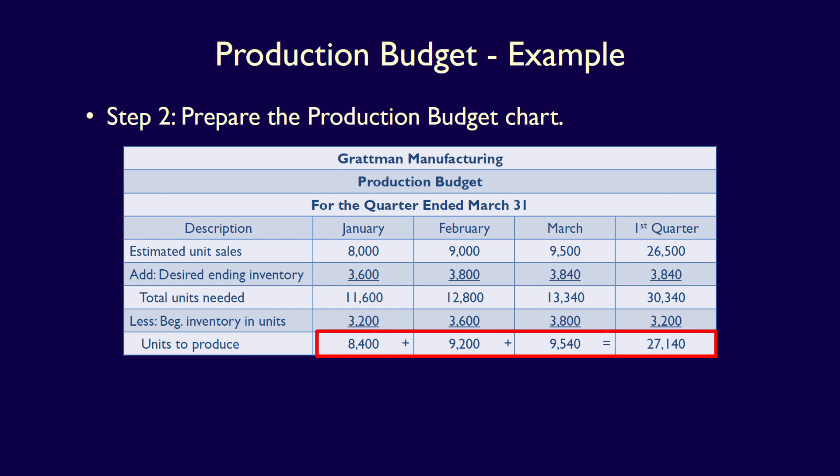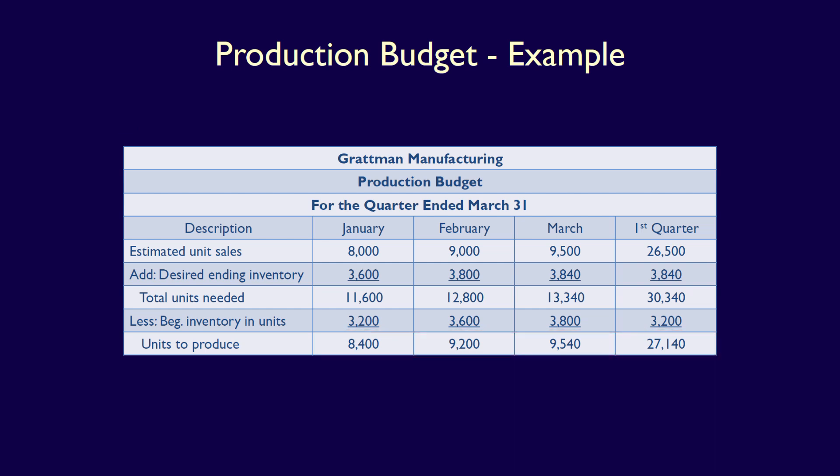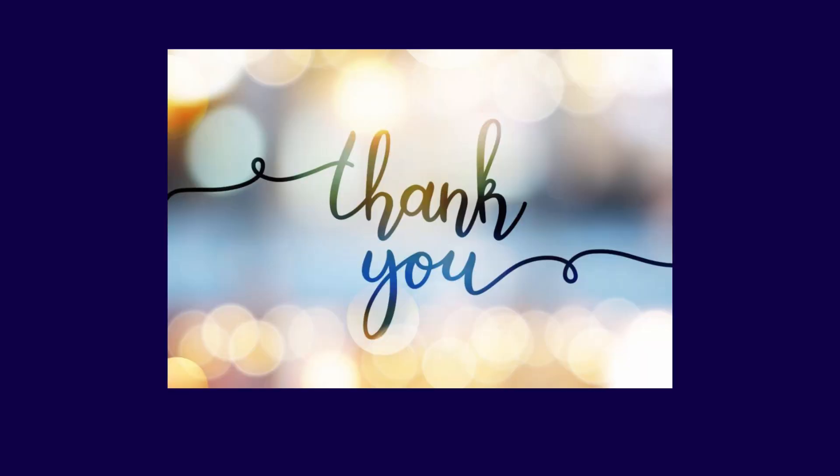We can do a quick final check to ensure our calculations are correct. By adding the units to produce for January, February, and March — 8,400 plus 9,200 plus 9,540 — we get 27,140 units, which equals the units to produce for the first quarter. So we know our chart works perfectly. We have now completed the second operating budget in the master budget process. Thanks so much for watching.